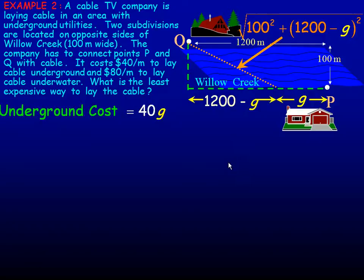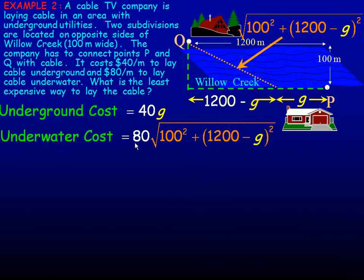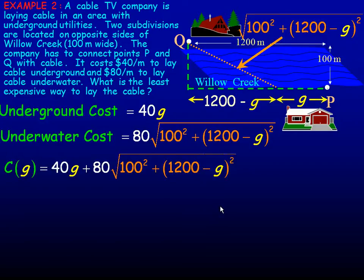Now the underground cost is, it says $40 per meter, and G is the number of meters underground. So we would just multiply G by 40. So that's the underground cost. The underwater cost would be this underwater distance multiplied by 80. So it's 80 times that underwater distance. So our total cost function, because there has to be, well, I guess it doesn't have to be underground. You could actually go straight from here to here completely underwater. But you might expect that that's going to be more expensive because it would all be at $80 per meter.